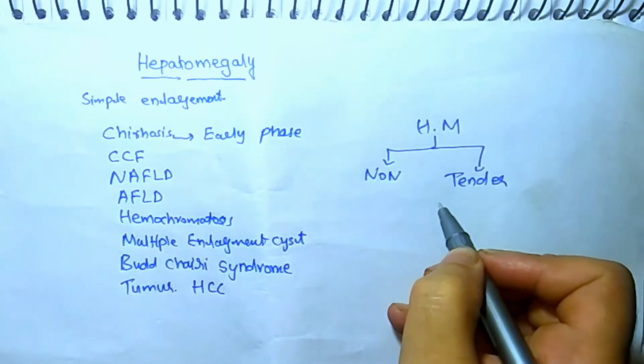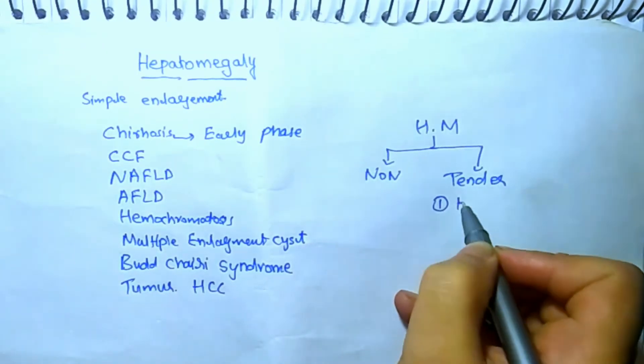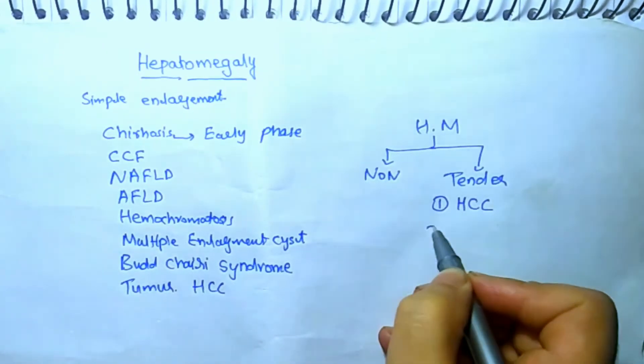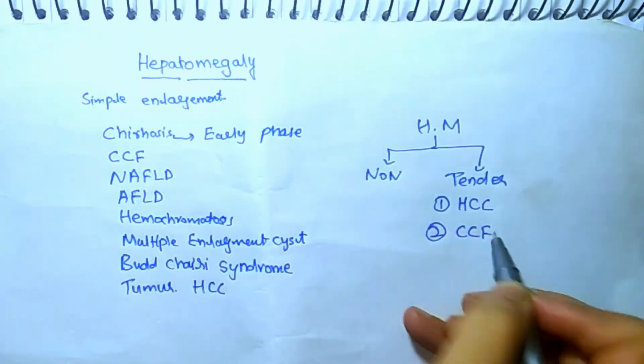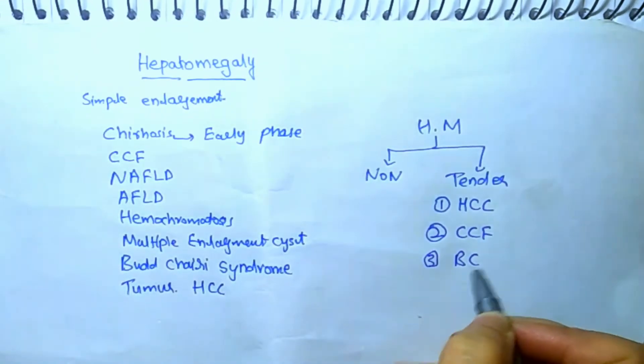The tender hepatomegaly main three causes are hepatocellular carcinoma, congestive cardiac failure, and Budd-Chiari syndrome.